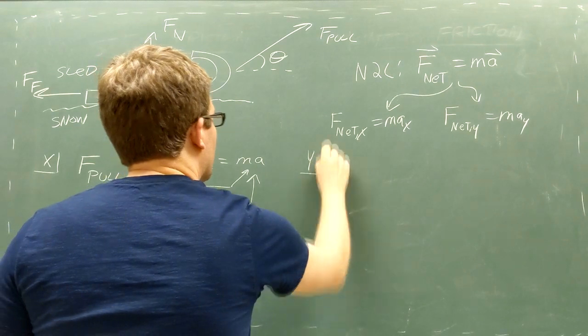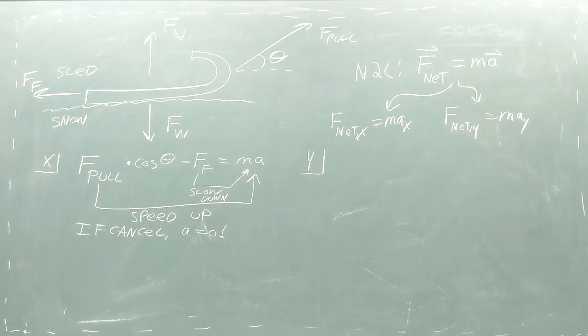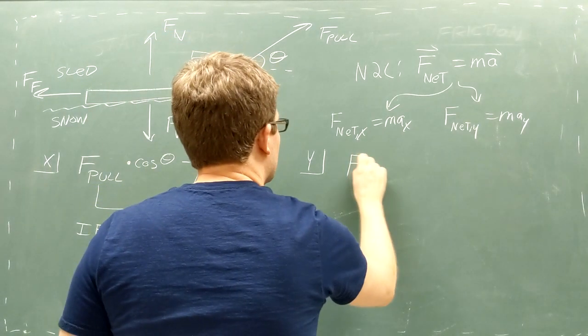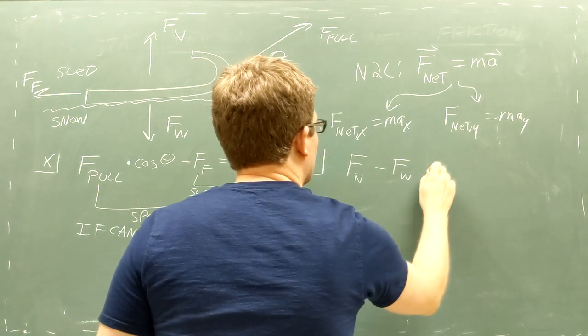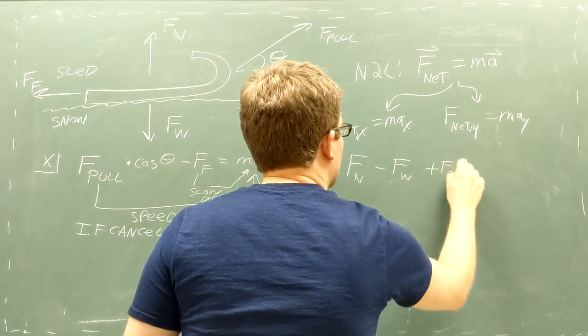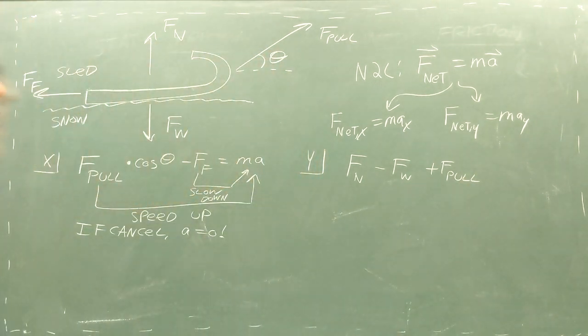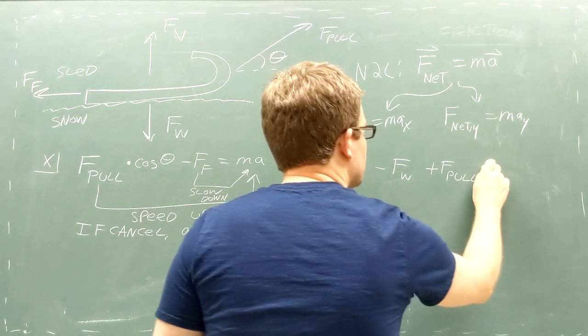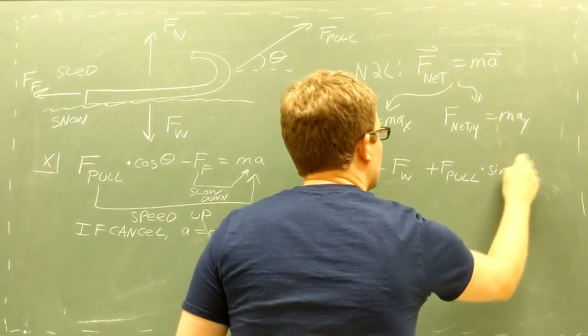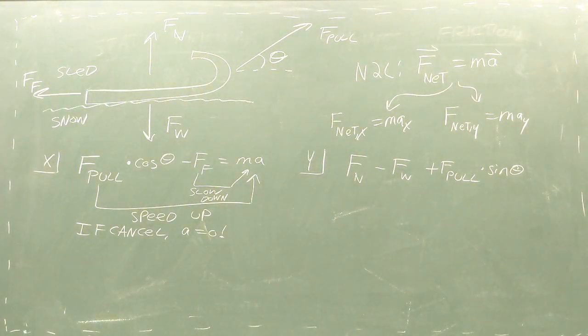Next, we need to look at the forces in the y direction. This time, there are three forces for us to look at. We have the normal force pointing upward and the weight pointing downward, but we also have the y component of your pulling force. To get this y component, we multiply the magnitude of your pulling force by the sine of the angle the rope makes with the ground.